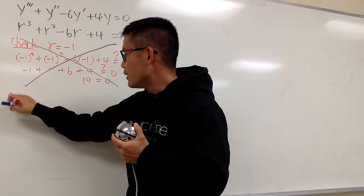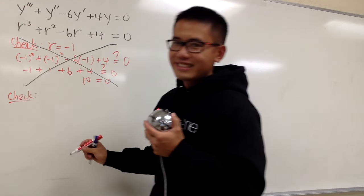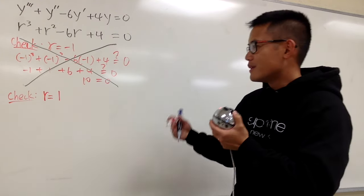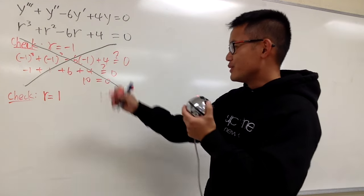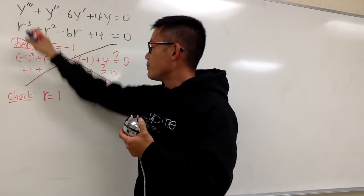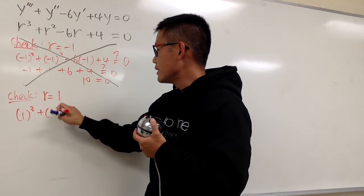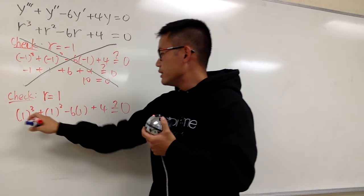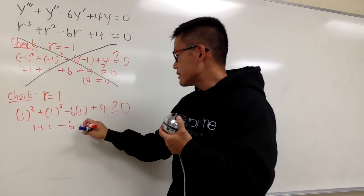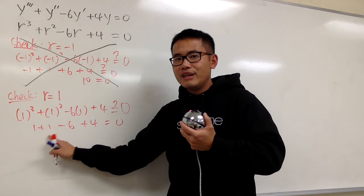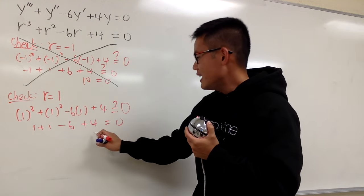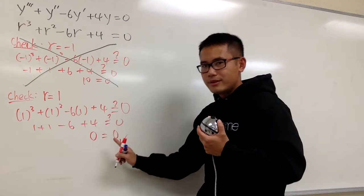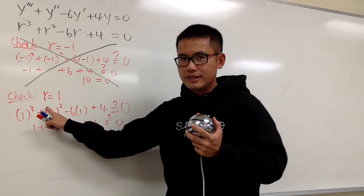Don't give up — as long as you have the patience, everything will work out. Let's check r equal to positive 1. Plugging 1 in: 1 to the third power plus 1 squared minus 6 times 1 plus 4. That's 1 plus 1 minus 6 plus 4, which is 2 minus 6 is negative 4, plus 4 is 0. And 0 equals 0 — yes! We found an r value: r equals 1.